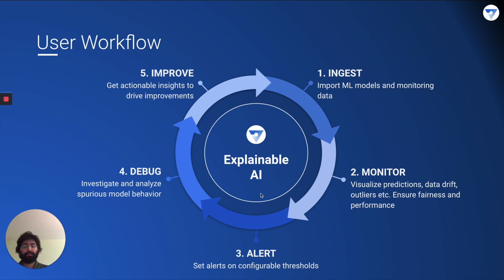At a simple level, an explainable AI workflow looks like the wheel shown here. You should have the ability to monitor an ML model and its data — see its predictions, the drift of the data it sees, and outliers. This helps ensure fairness and performance. The workflow should have the ability to set alerts on certain parameters, keeping a constant automated watch over your AI system's performance. There should also be an ability to debug and investigate model behavior that is out of the ordinary, and to get actionable insights to drive improvements.